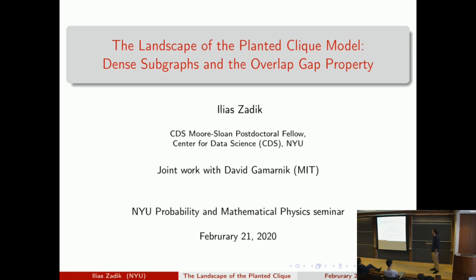The topic will be the planted clique model — a model that has been analyzed from very different fields: probability theory, discrete probability theory, theoretical computer science, and statistics. I will talk about geometric results for the planted clique model, specifically concerning dense subgraphs and a property originating in spin glass theory called the overlap gap property, and how it appears in the planted clique model.